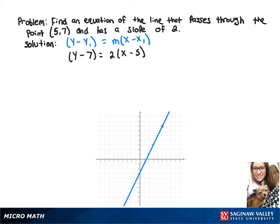Then we can distribute the 2, and that leaves us with y minus 7 equals 2x minus 10. Now we'll add 7 to both sides, and that gives us our equation y equals 2x minus 3.